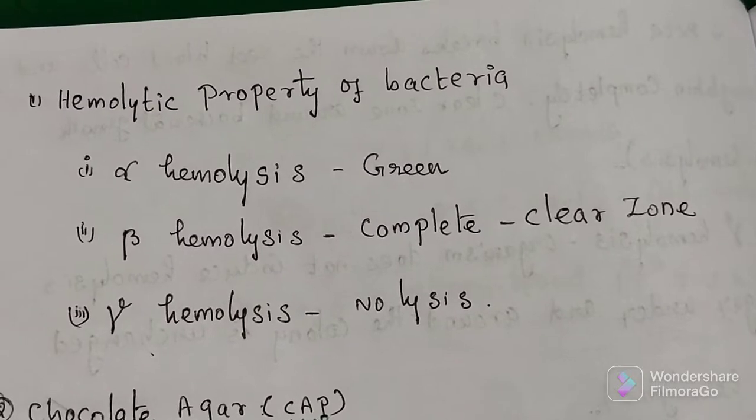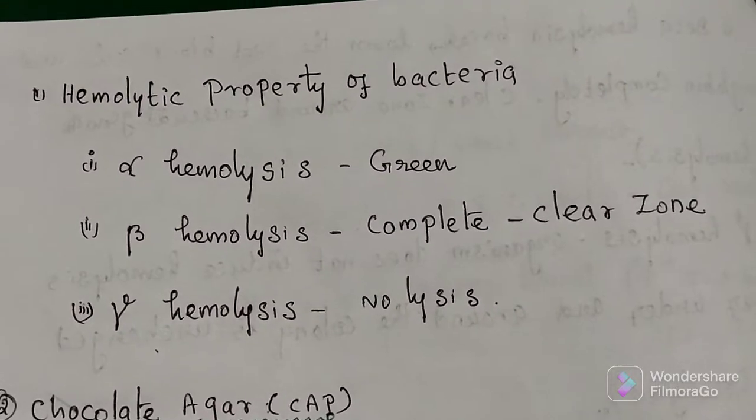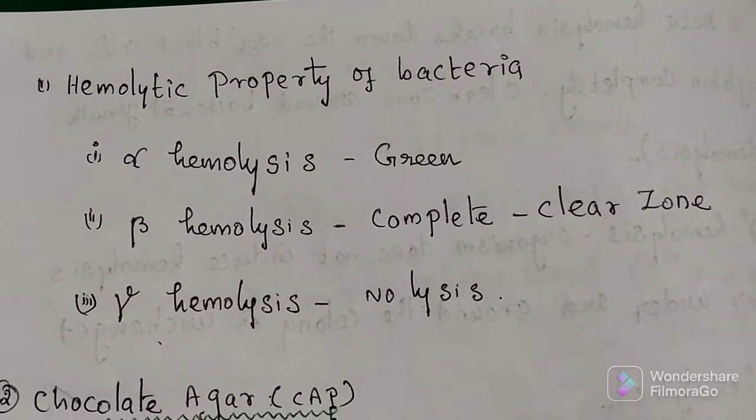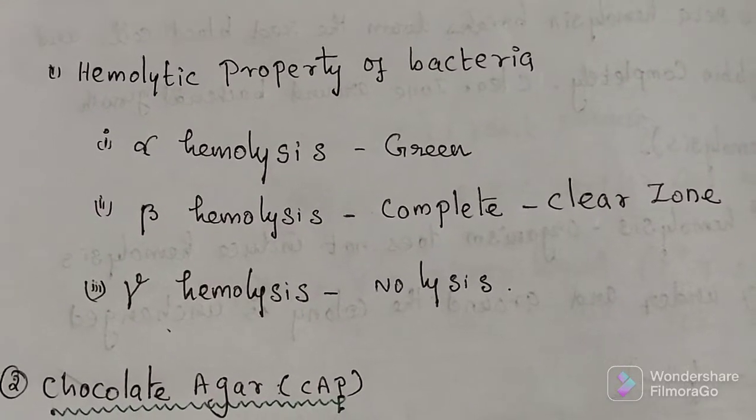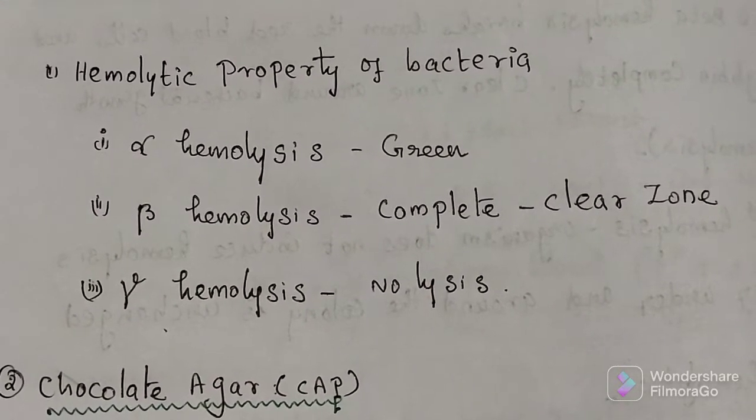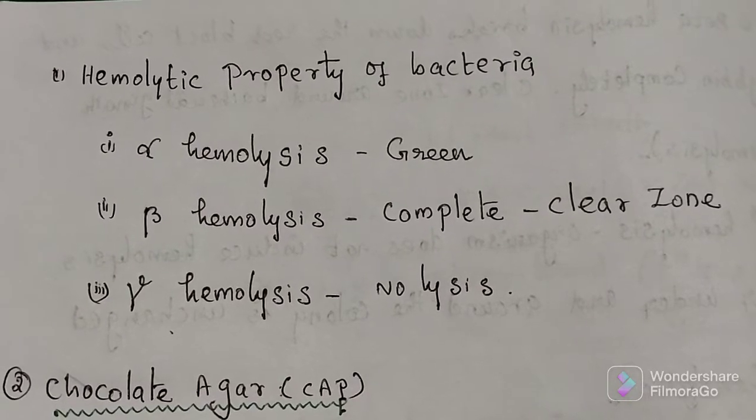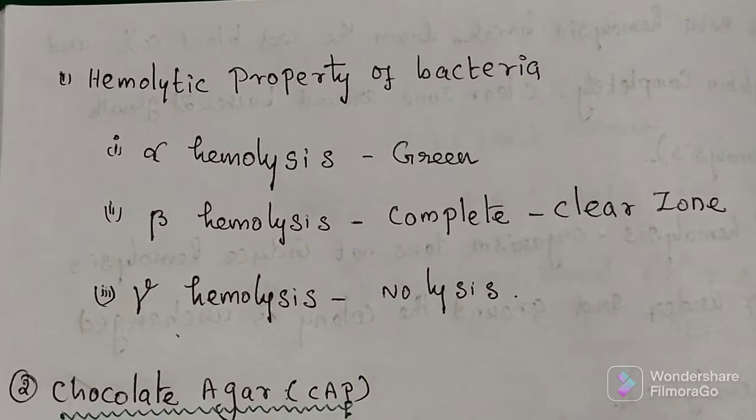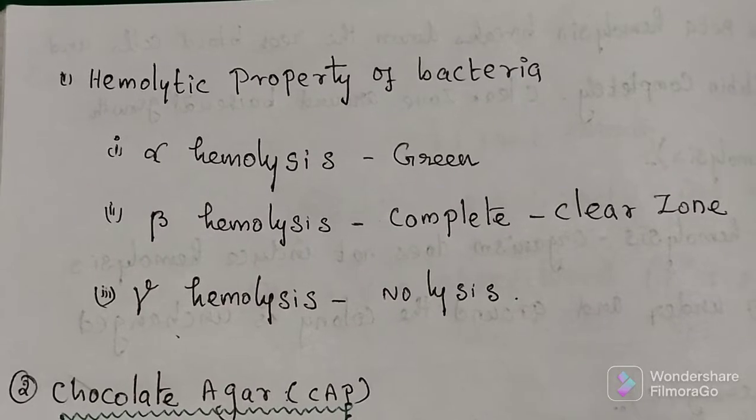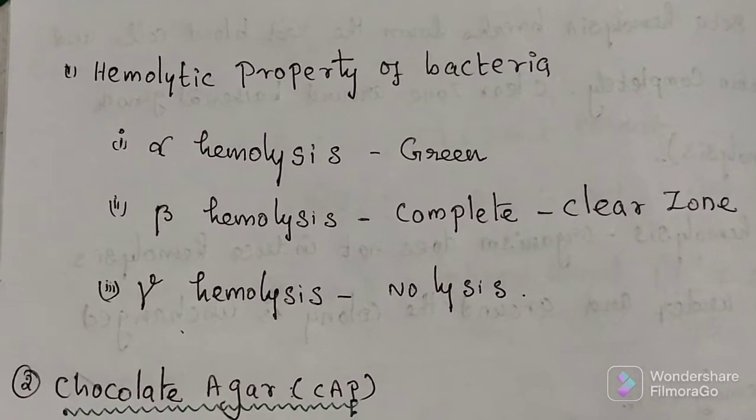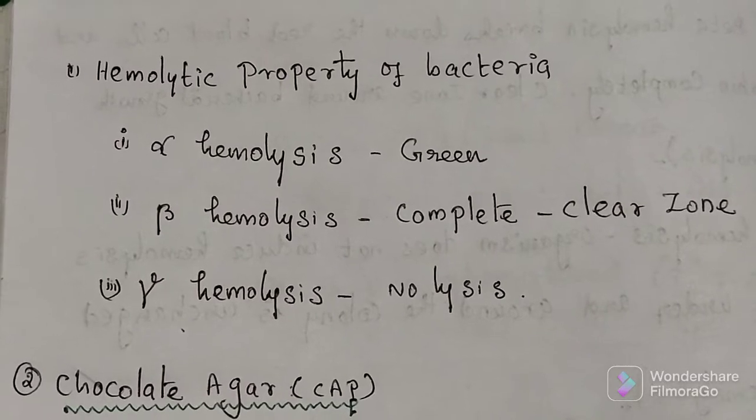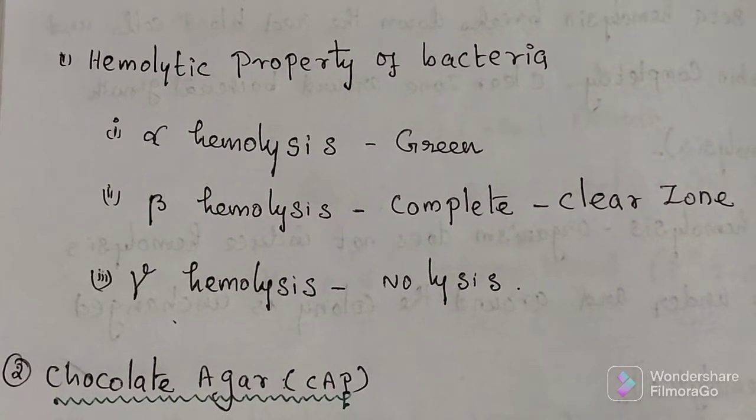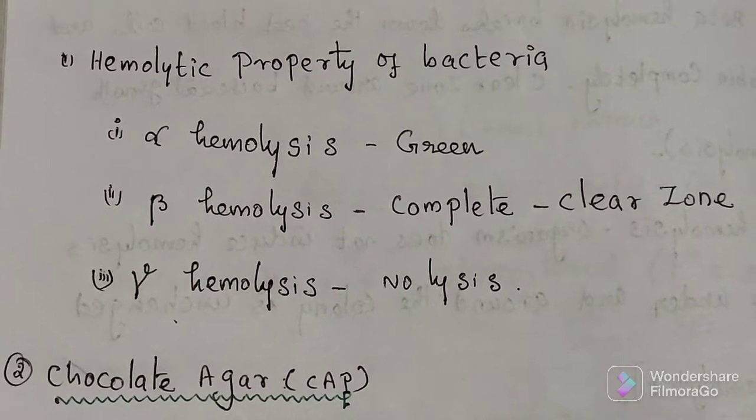Then hemolytic properties of bacterium. The key difference between alpha, beta, gamma hemolysis is that alpha hemolysis is the partial destruction of red blood cells in the blood, while beta hemolysis is complete destruction of red blood cells, while gamma hemolysis does not involve any breakdown of red blood cells.